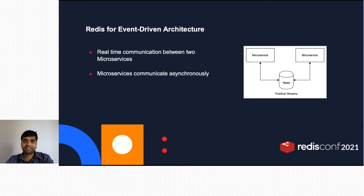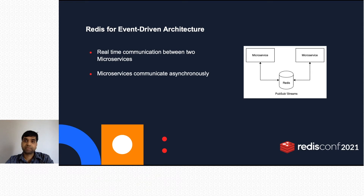Different microservices are developed to handle specific business use cases. These microservices do not have access to each other's data directly. Interactions between two microservices can be synchronous or asynchronous. Redis PubSub supports real-time communication — one microservice can produce an event and all subscribing microservices can get notified and act on it accordingly. Redis Streams is a data structure that allows microservices to communicate asynchronously. A microservice can add a message to a stream, which can be processed by consumer microservices at their own convenience. This enables loosely coupled microservices which can be independently deployed. The choice of using PubSub versus Streams depends upon the business use case — Streams provide at-least-once guarantee, whereas PubSub provides at-most-once.